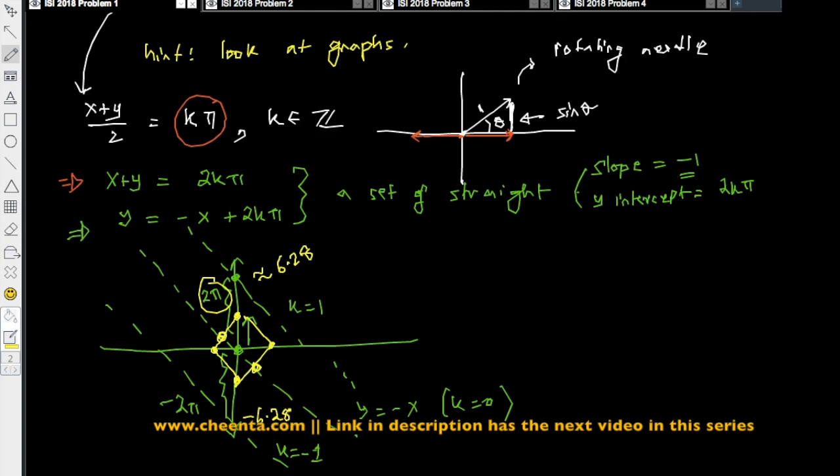So similarly, -2π is -6.28. So all other parallel lines will miss this graph of |x| + |y| = 1. So only these two points will work, and you can find the coordinate of these two points.